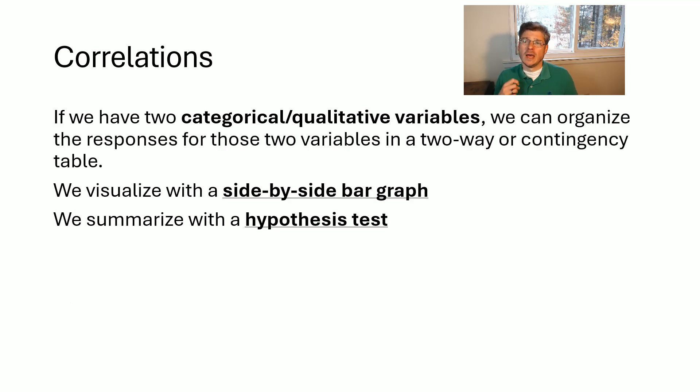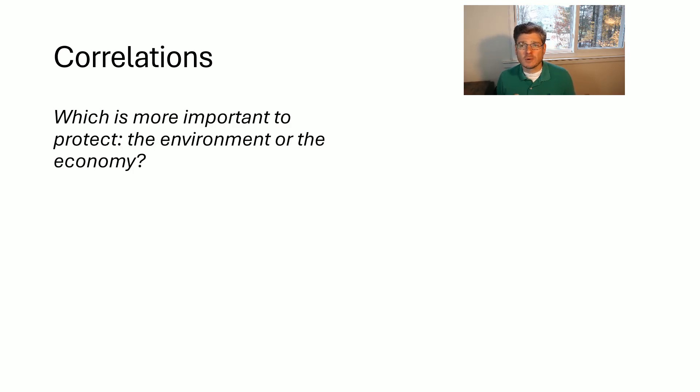All right. So how do I figure out if there's a correlation mathematically? Well, if I have two categorical variables or qualitative variables, right, things that are just can be put in categories or describe attributes, but they aren't actually numerical, we first want to organize those responses and those two variables in our two way table or sometimes we call that a contingency table. And once we have that information organized, then we visualize with a side by side bar graph and then we can summarize with the hypothesis test.